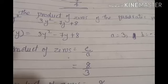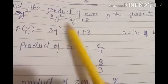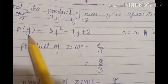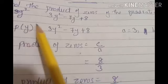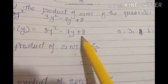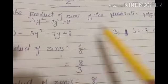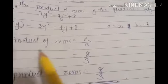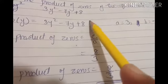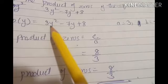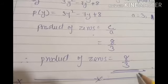Find the product of zeros of the quadratic polynomial 3y² minus 7y + 8. This is a quadratic polynomial in variable y, so we write p(y) = 3y² minus 7y + 8. The value of a is 3, b is minus 7, and c is plus 8. Product of zeros = c upon a = 8 upon 3. So the product of zeros is 8/3.